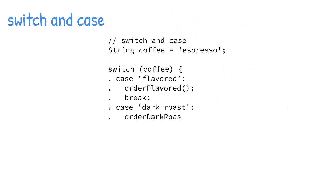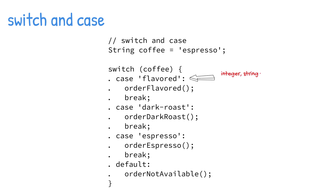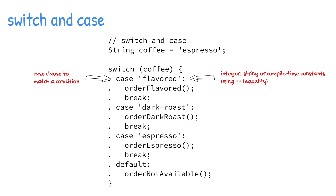The switch statement compares integer, string, or compile-time constants using the equality operator. It is an alternative to if and else statements. The switch statement evaluates an expression and uses the case clause to match a condition and execute code inside the matching case. Each case clause ends by placing a break statement at the last line. If you have an empty case clause with no code, the break statement is not needed since Dart allows it to fall through.